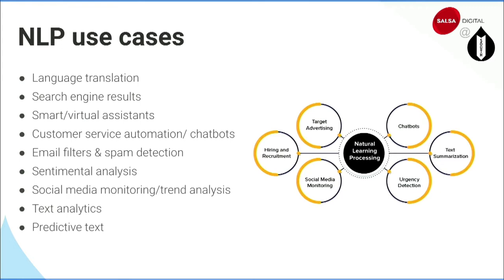Search engine results — if you Google 'I want to book a flight,' it shows you a way to book directly through Google. NLP understands your context and provides better results. Other use cases include virtual assistants like Siri and Alexa, chatbots for customer service, process automation, email filtering, spam detection, sentiment analysis, social media monitoring, text analytics, and predictive text.